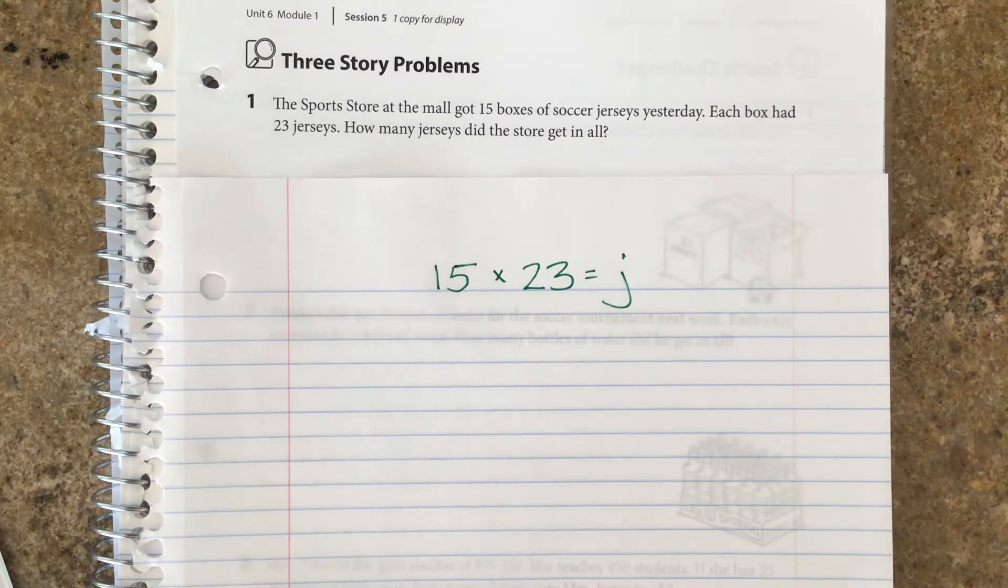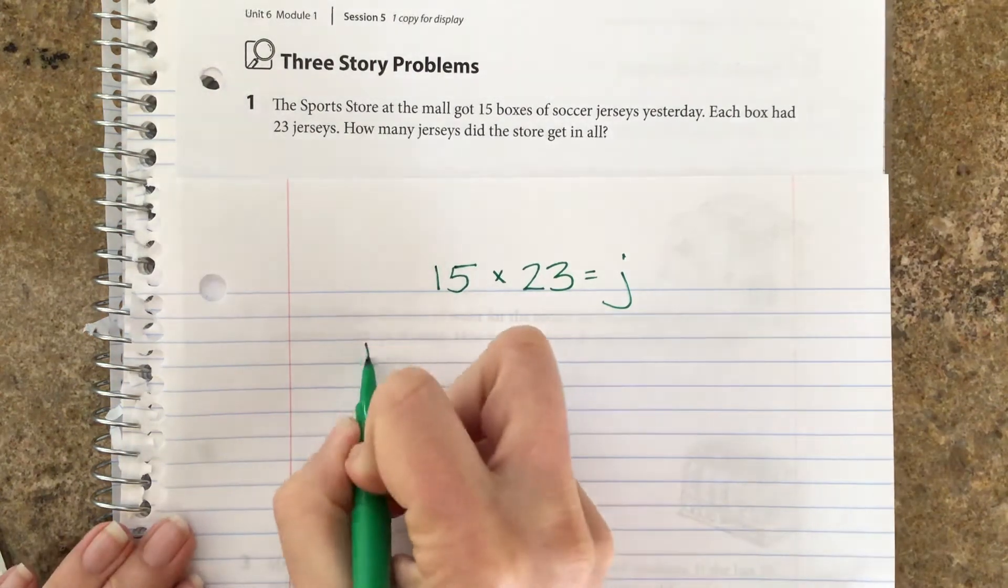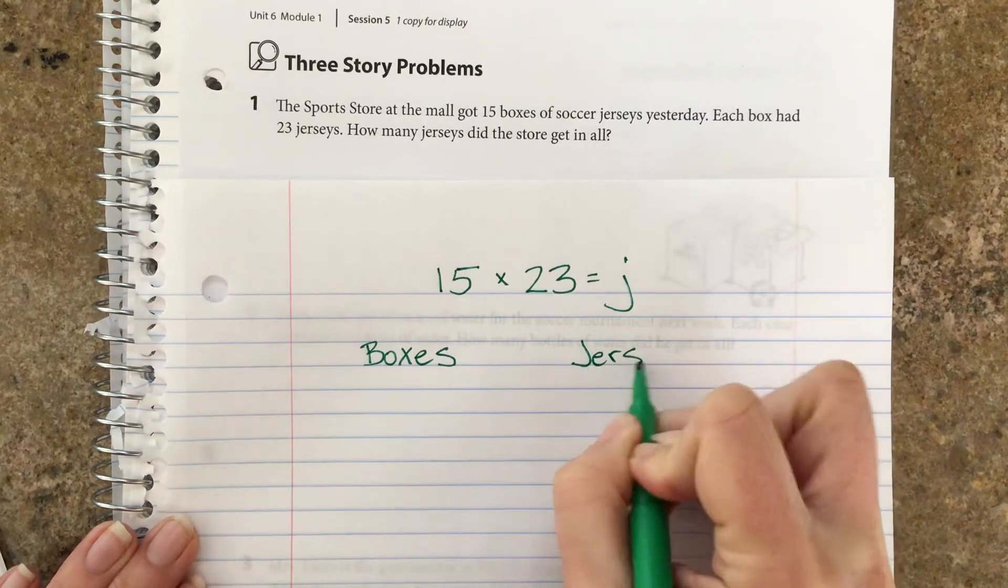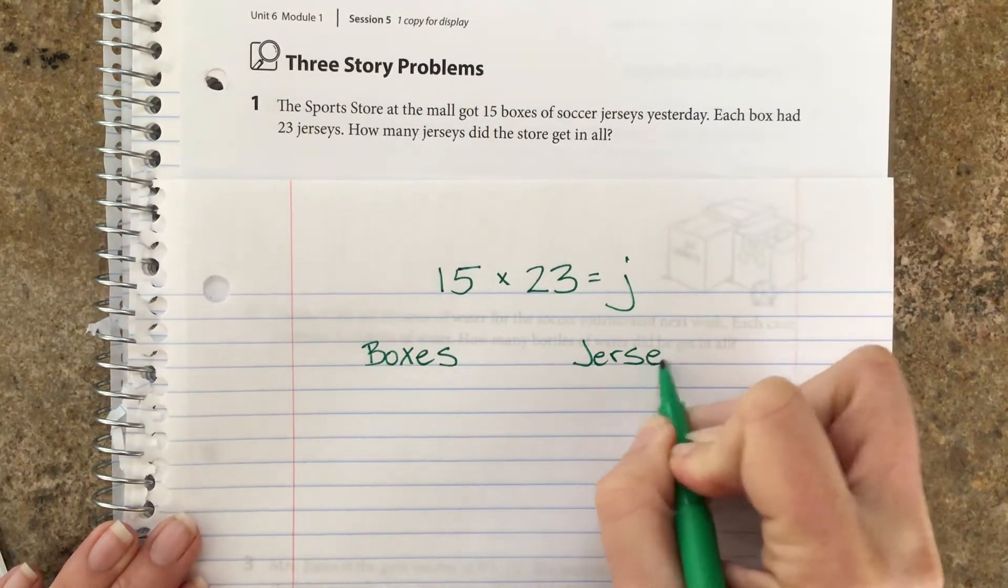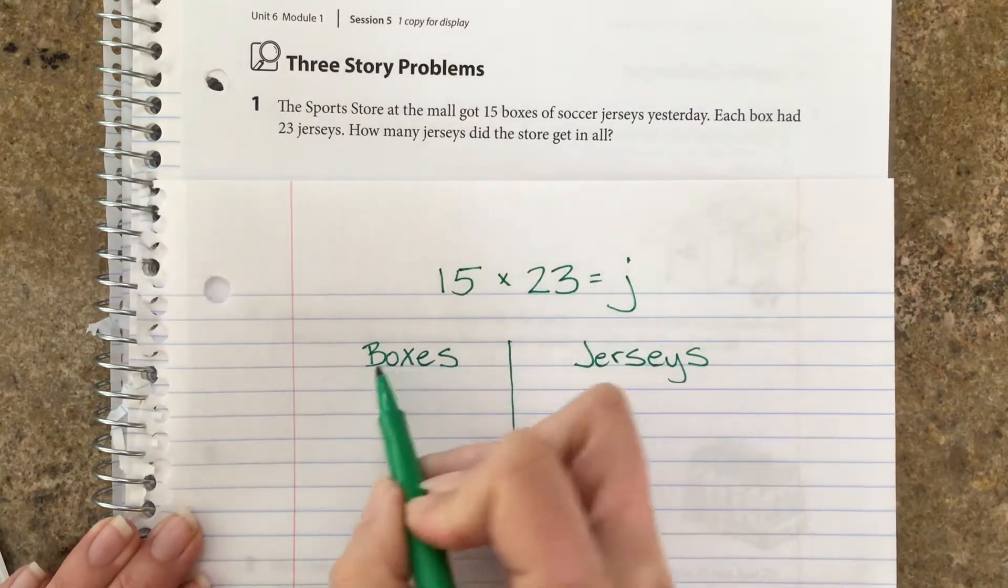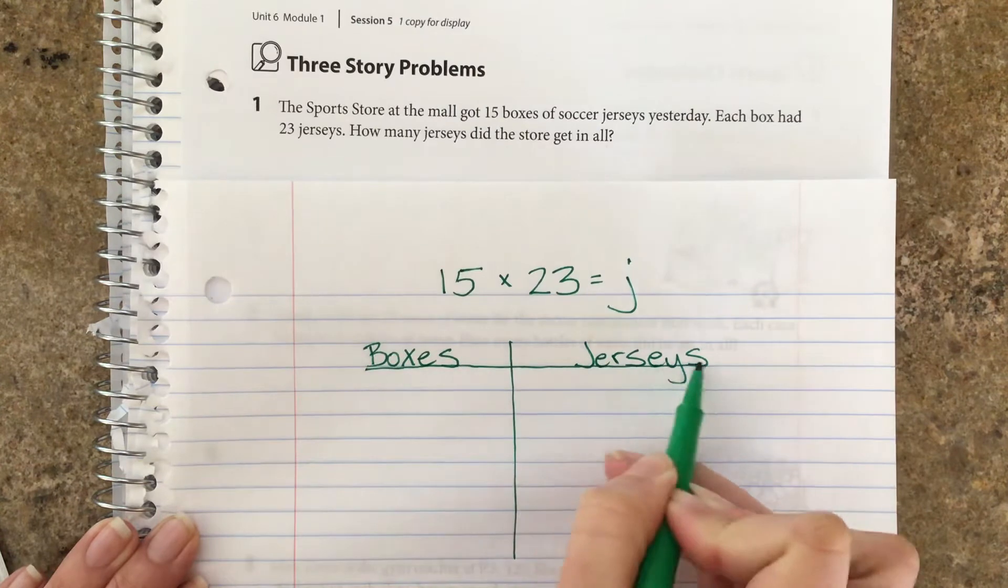Once you have your estimate, I would like for you to think about your different strategies and press pause and give it a go. All right, I'm going to assume you paused. So I'm thinking some of you might have done what we did yesterday with a ratio table, and that would have looked like maybe boxes and jerseys.